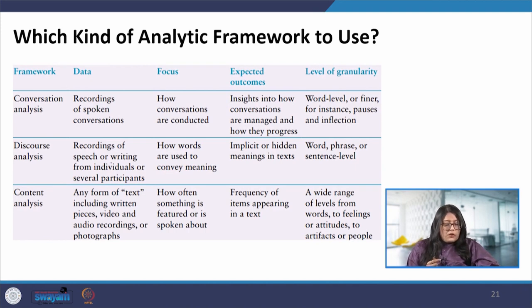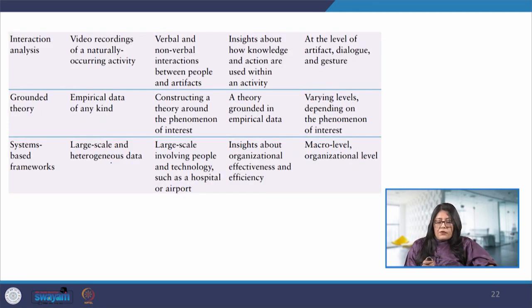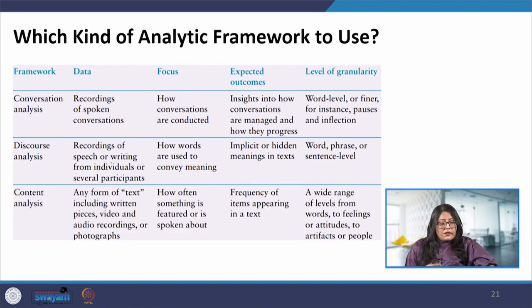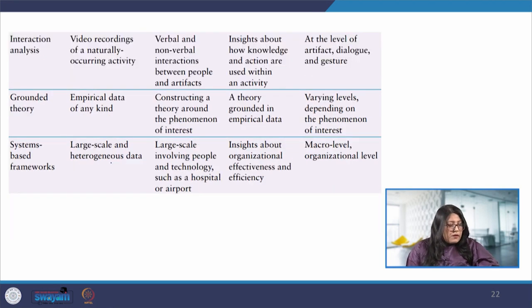There are several types of analytical frameworks which help in analyzing and interpreting the data from a qualitative study. Here there are six different approaches which are mentioned in terms of the level of granularity, which is basically the detail that is involved. For example, the conversation analysis has a fine level of detail and it allows the details of what is said and how to be examined. But in the systems-based framework, we can see that it takes a broader scope and has a coarser level of granularity or detailing.